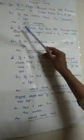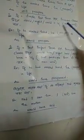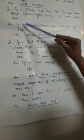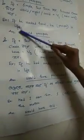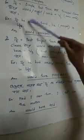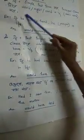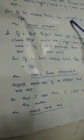Now come to the second rule. If the subordinate clause is in the simple past tense, the principal clause uses would or could.